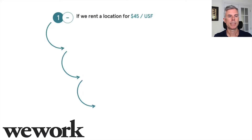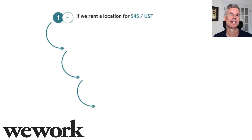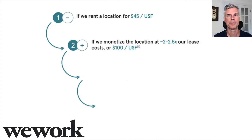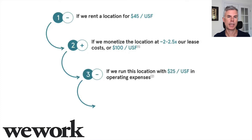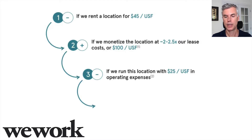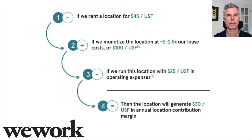Let's look at some real businesses. Two of my favorite poster children for tech companies with trouble. One is WeWork, which blew up spectacularly, though there's actually a good underlying business there — it's just not a tech business. WeWork's unit economics: if we rent a location for $45 per square foot and monetize at two to two-and-a-half times our lease costs — so $100 per square foot — and run the location with $25 in operating expenses, that's $45 plus $25, totaling $70 out of the $100.